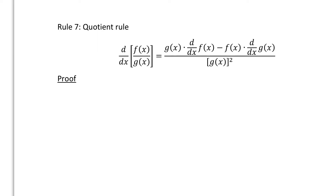The quotient rule, written out nicely as rule number 7, is: the derivative of f(x) over g(x) equals g(x) times d/dx of f(x), minus f(x) times d/dx of g(x), all over g(x) squared.